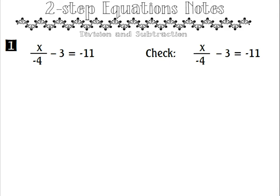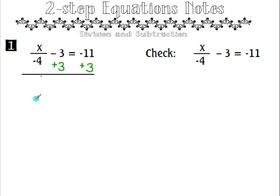These are notes in the series of two-step equations, finishing off with division and subtraction. In our first equation we have x divided by negative 4 minus 3 equals negative 11. To undo this subtraction of 3, we are going to add 3 to both sides of our equation. We are left with x divided by negative 4 equals negative 8.